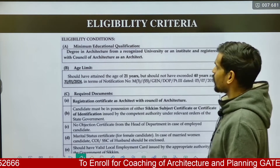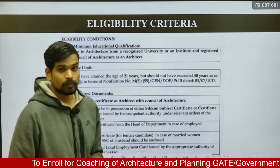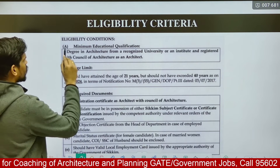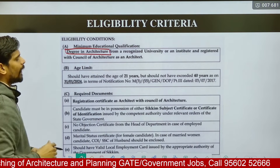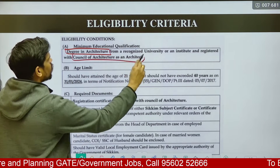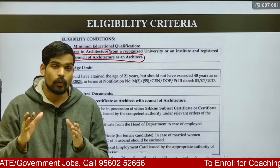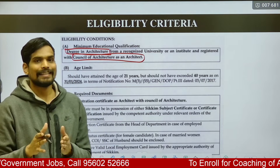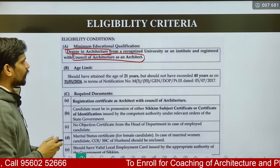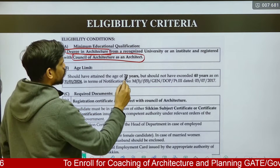As far as eligibility criteria is concerned for the post of Assistant Architect, the minimum educational qualification is a B.Arch degree from any recognized university. The candidate should also be registered with the Council of Architecture, New Delhi — meaning a COA certificate and registration is required.